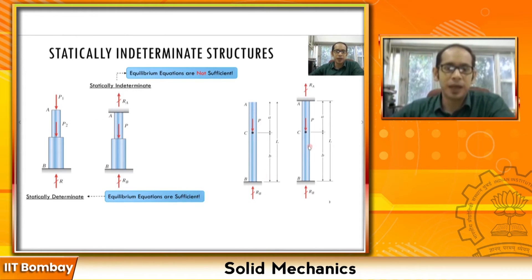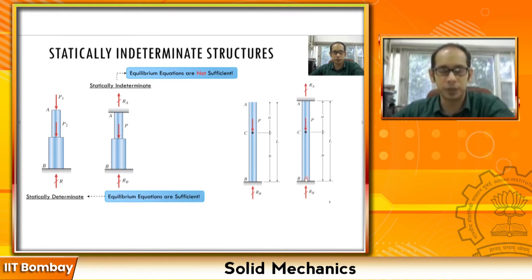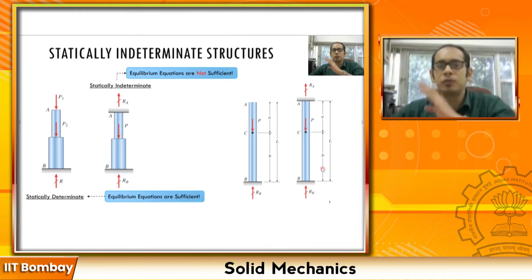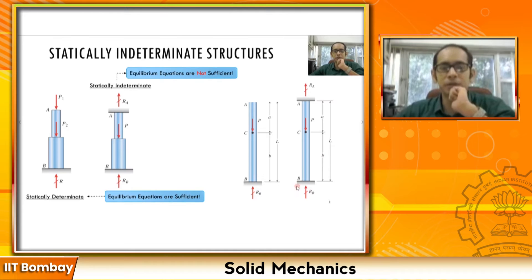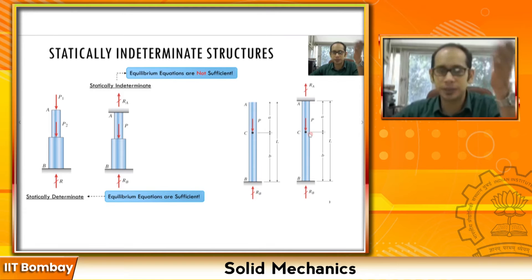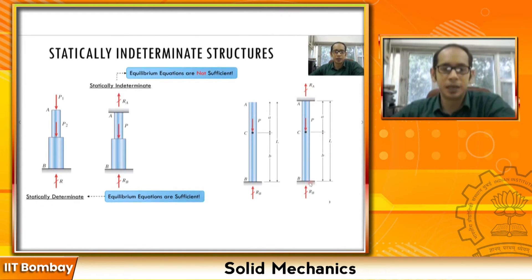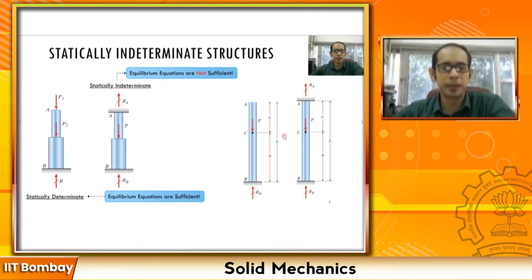Similarly, in contrast to that example, here you have a bar of uniform cross-sectional area A from top to bottom. We do not know what reactions R_A and R_B are. Can you intuitively guess R_A and R_B before solving? The answer is: R_A = P·b/L and R_B = P·a/L — from simple intuition, but let us see if we can derive these mathematically.